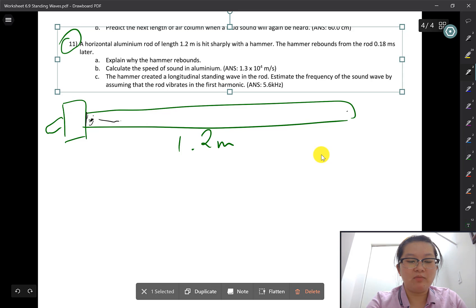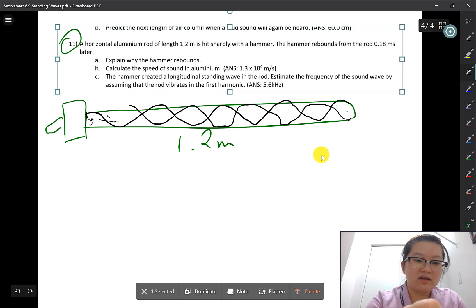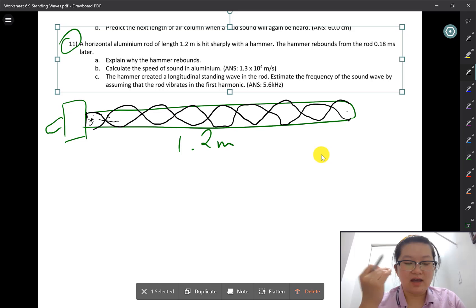After the hammer hits the aluminum rod, it sends a wave—a sound wave, a vibrational wave—to the other end. The wave reflects back and interferes with itself, creating a standing wave. This causes the rod to resonate.